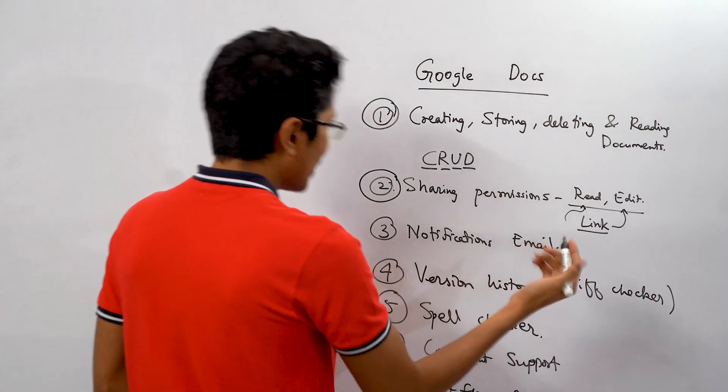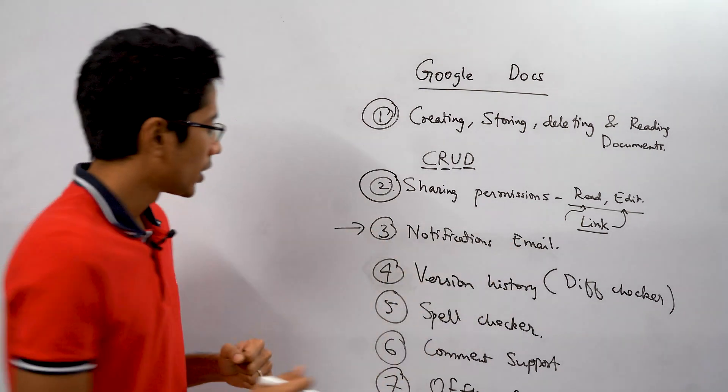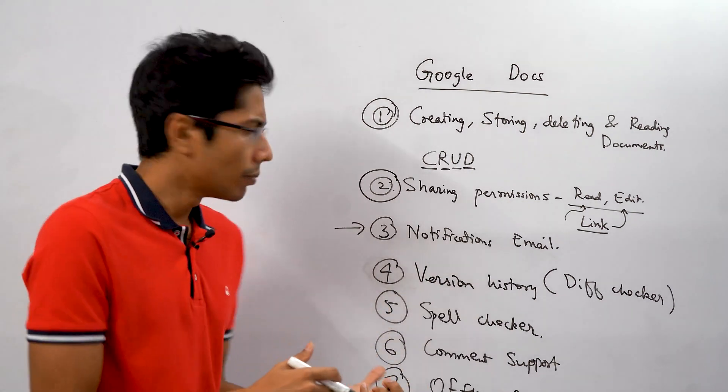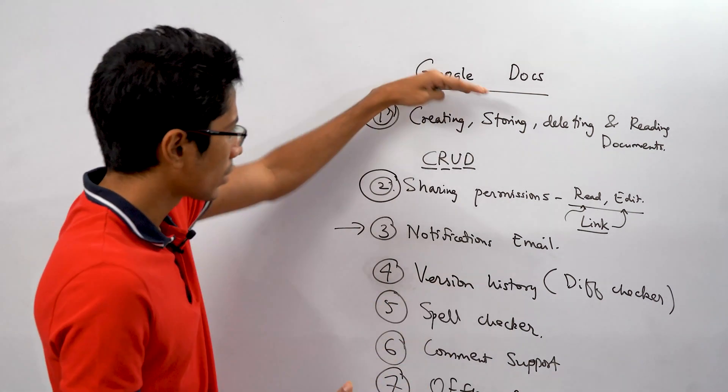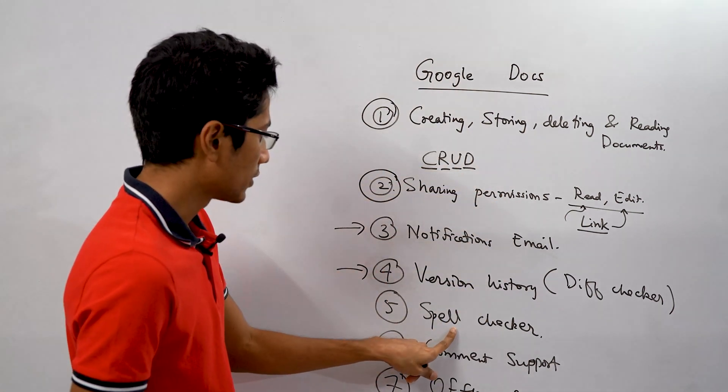Notifications by email, yeah, this is not really a core feature but we can talk about this at a high level. The version history thing, this is again quite important but as we go along and solve the engineering problems this should be solved by itself. So I'll keep this on the second side.